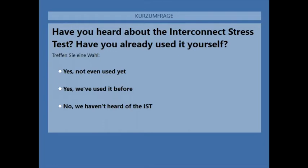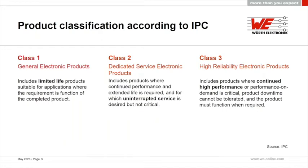Now we come to product classification according to the IPC. There are three different classes — class one, class two, and class three — where requirements increase from class one to class three. Class one covers limited life products, class two desires uninterrupted service but is not critical, whereas class three demands high performance on demand, and if that cannot be delivered, the product does not fulfill class three requirements.